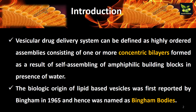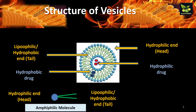Vesicles or vesicular drug delivery systems are also known as Bingham bodies. Now we will see the structure of these vesicles. These are amphiphilic molecules and they have two ends. One is the circular end called the head, which is a polar or hydrophilic end. The tail is the lipophilic end and it constitutes non-polar compounds or hydrocarbons.